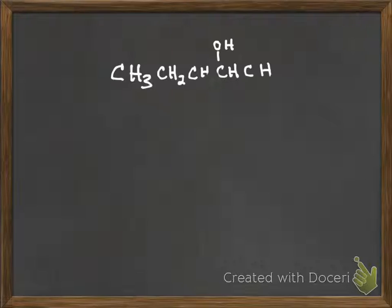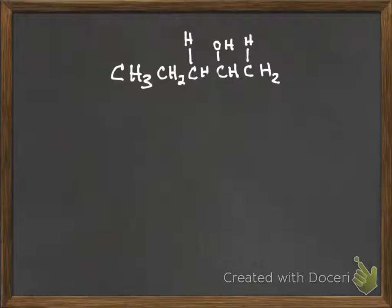I drew the H's out explicitly. So in a dehydration reaction, you get rid of the OH and the H that's next to it. But in 2-pentanol, it's got H's on both sides. So there are two possible products for this reaction.